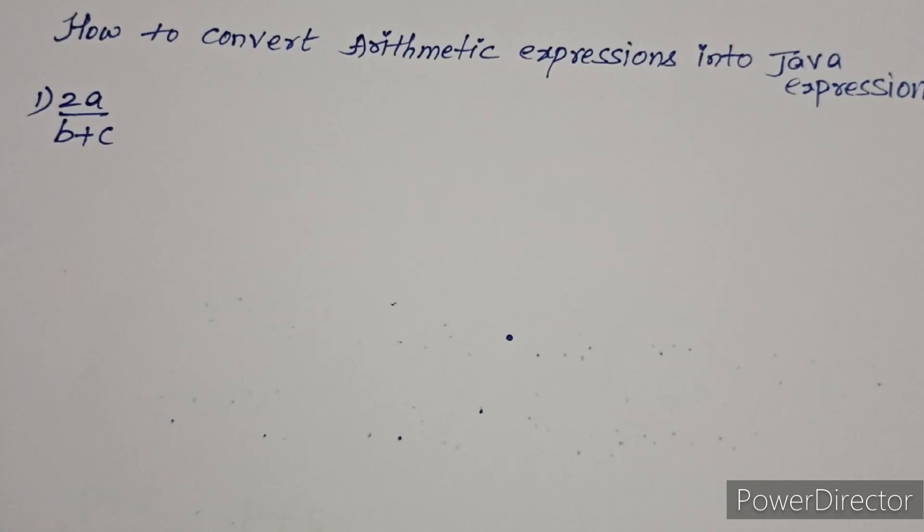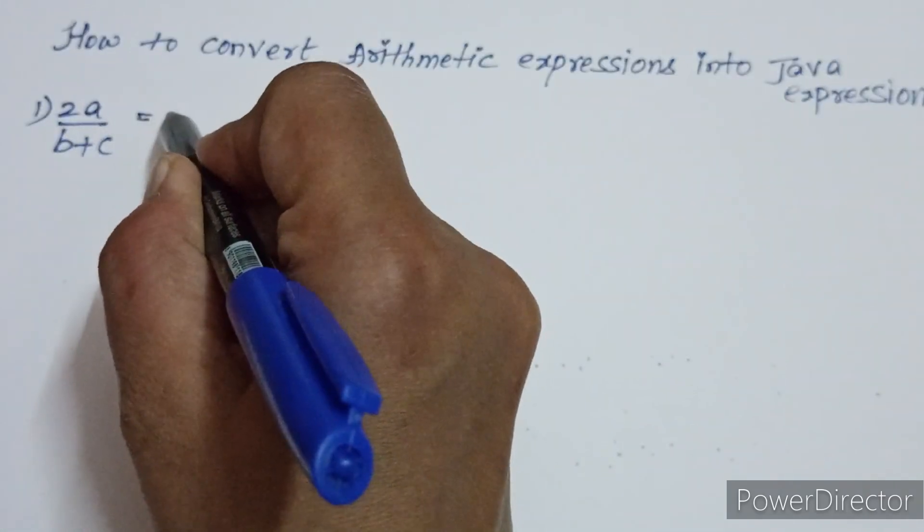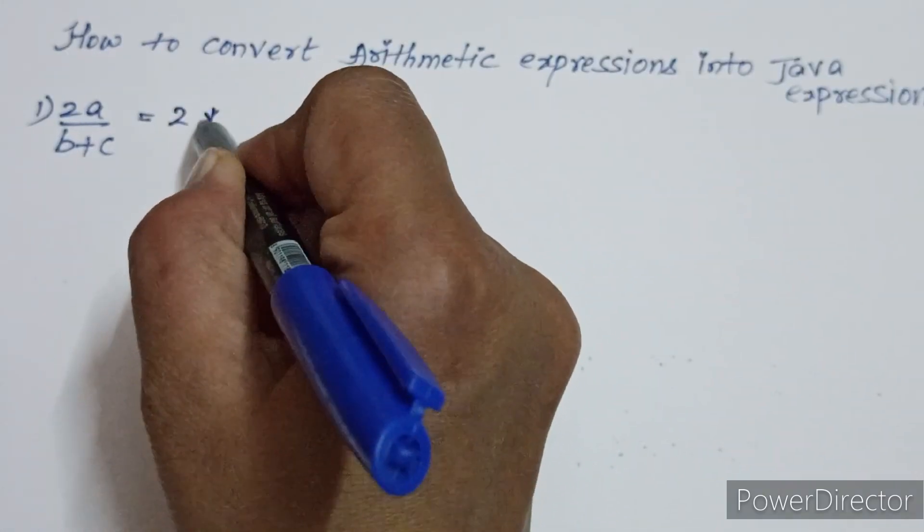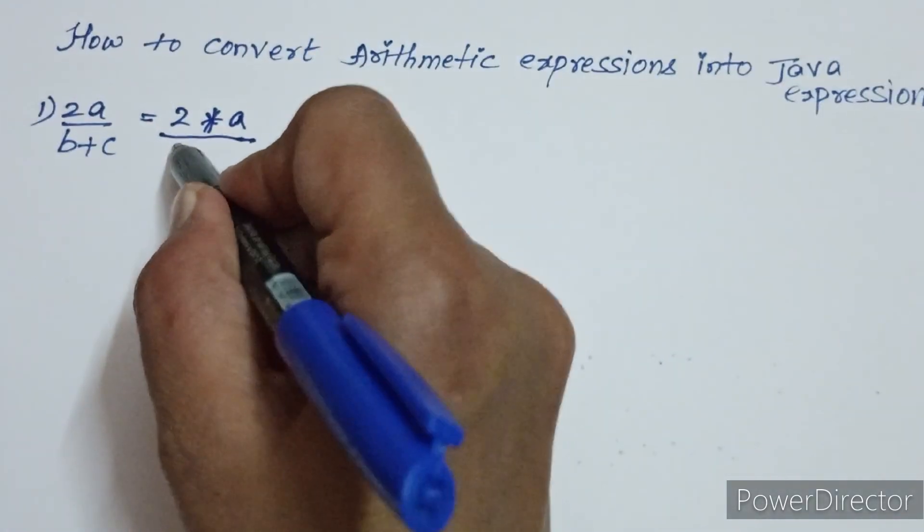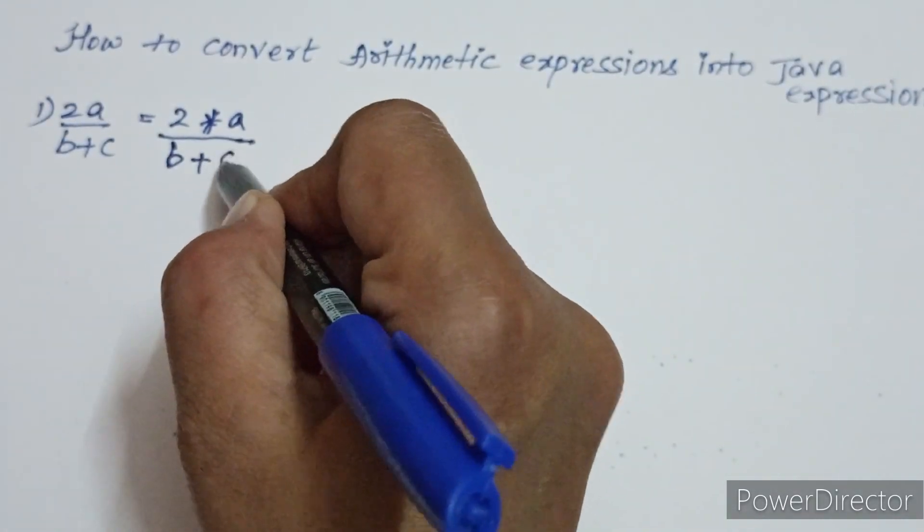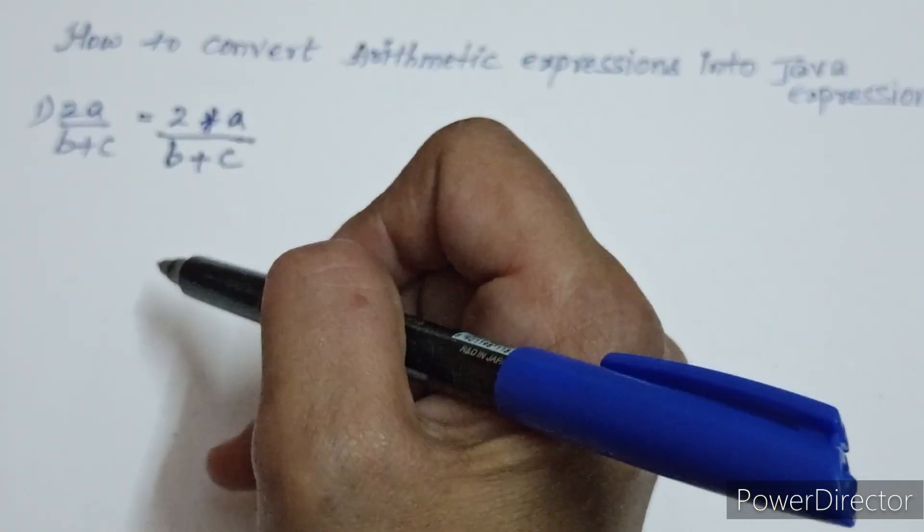First example is how to convert this expression into Java expression. The example is 2a by b plus c. How will you write 2a in Java? 2a is also written as 2 into a. In your keyboard, into is represented by the asterisk symbol. So we write 2 star a by b plus c.